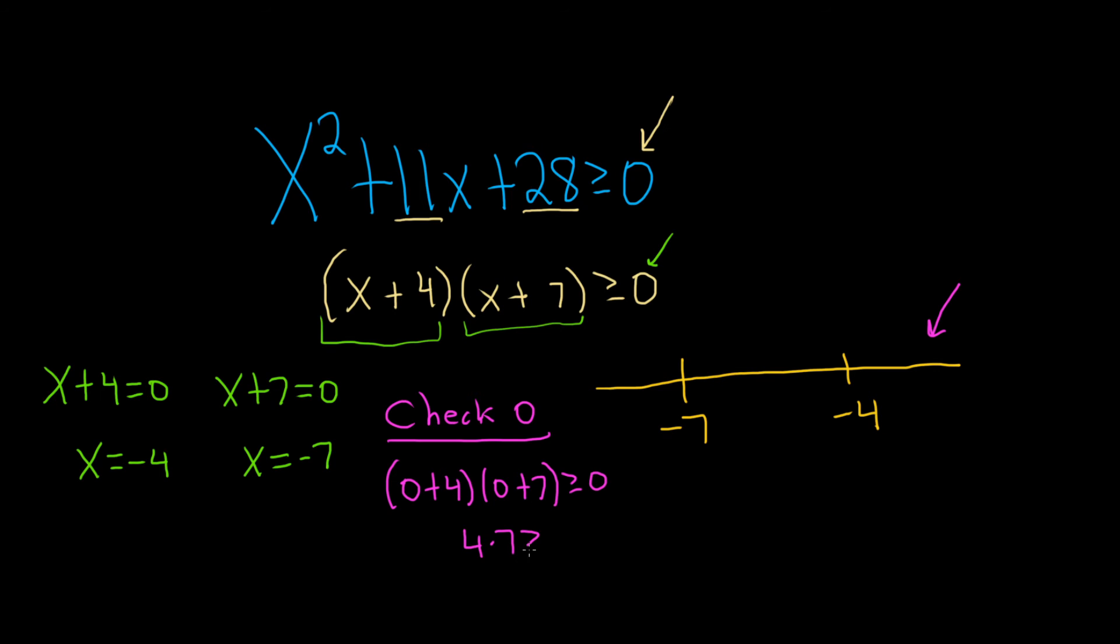So we have 4 times 7. And we want to see if this is greater than or equal to 0. So 28 greater than or equal to 0. Yes, that is true. 28 is actually a positive. It's definitely true. So we're going to shade here.